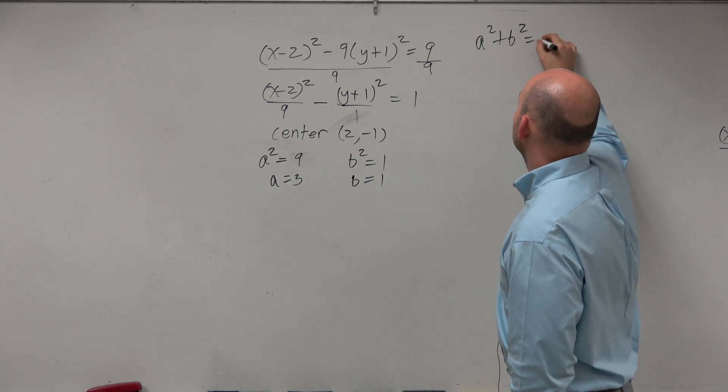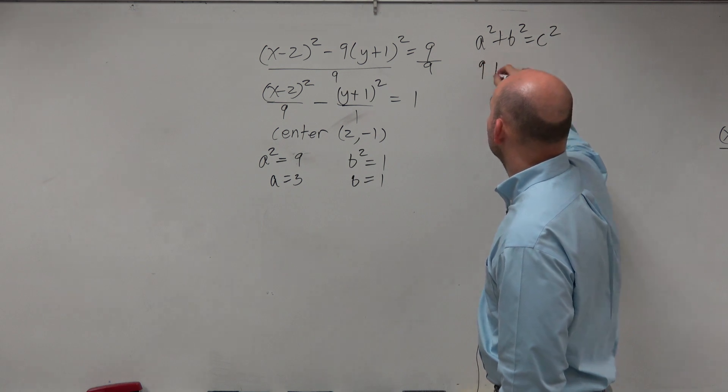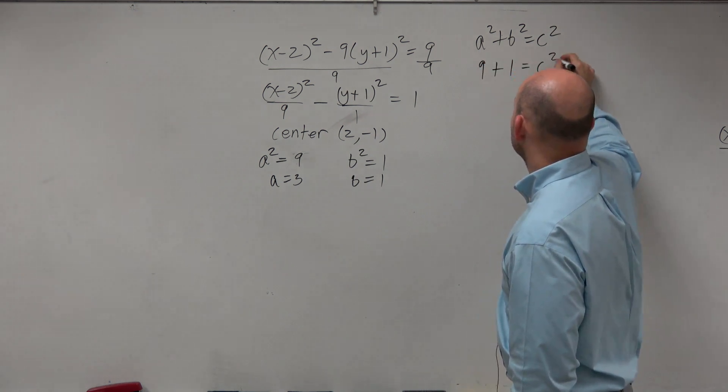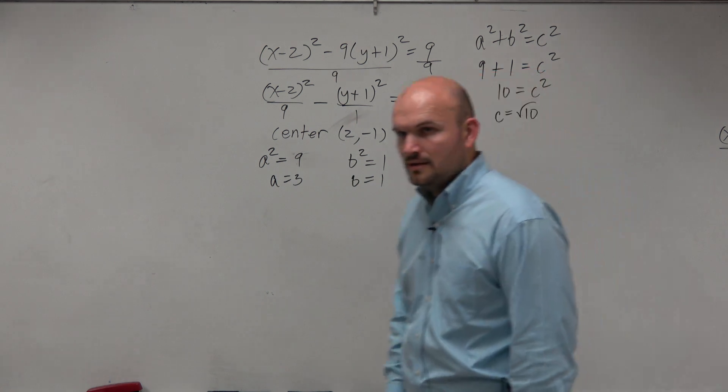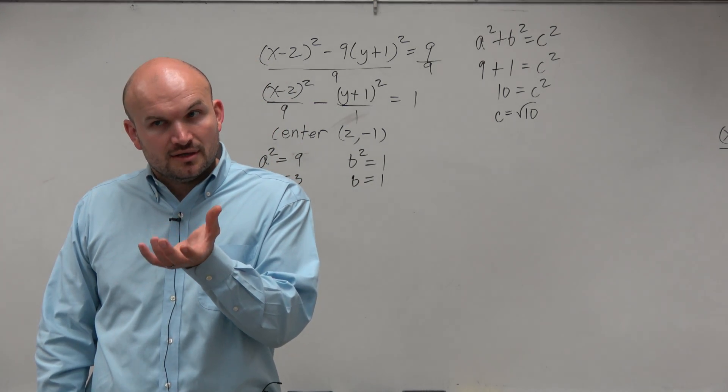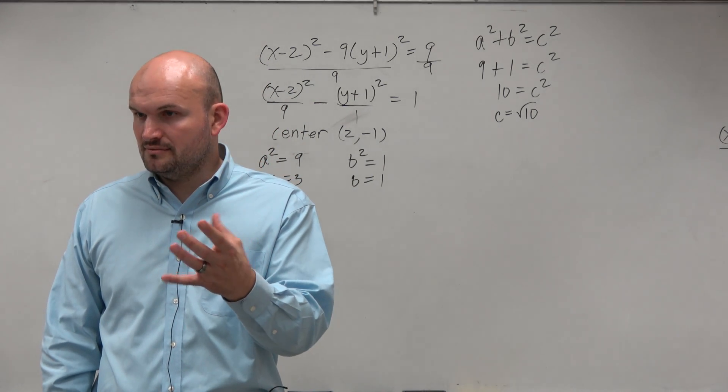a² plus b² equals c². So therefore, we're going to have 9 plus 1 equals c². So 10 equals c², or c equals the square root of 10. So now we have identified our h and our k and our a, b, and c, right?